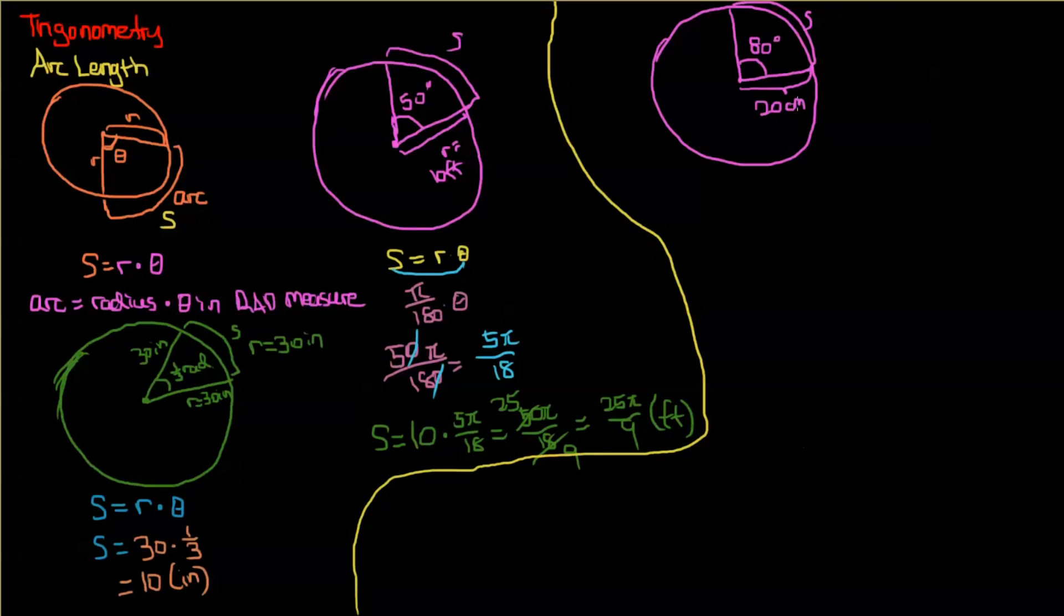Now I'm going to show you how to solve this problem. So, we already know that we cannot use degrees in our formula s equals r theta. So, we need to, first of all, transform 80 degrees into radians. Now, we need to multiply 80 by pi over 180. So, we will get 80 pi over 180. And we can go ahead and cross all the zeros. We can divide it by 2. We get 4 pi over 9. So, that is the measure in radians of this angle.